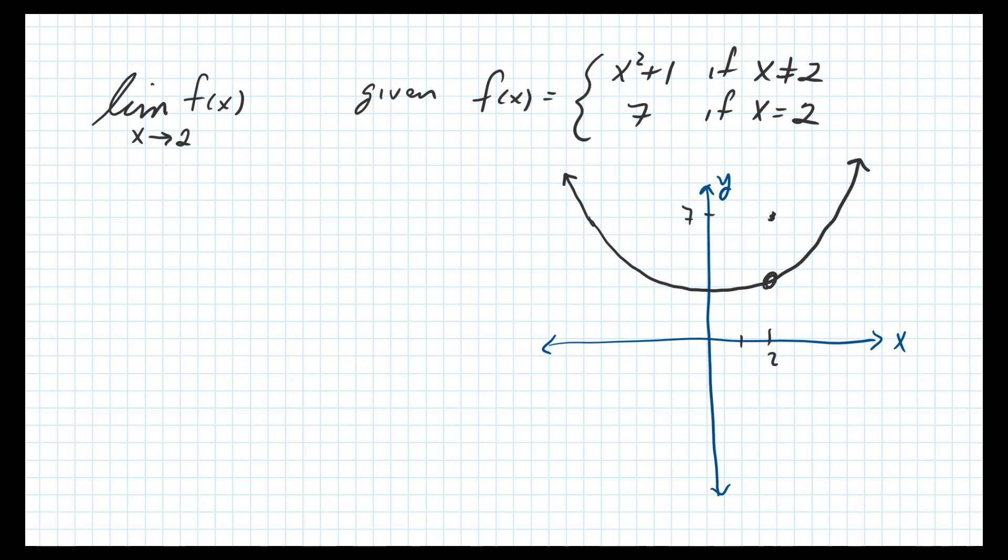Okay, so what we want to do is look for the limit as x approaches 2 from the left and as x approaches 2 from the right. So as x approaches 2, notice x is not really equal to 2.